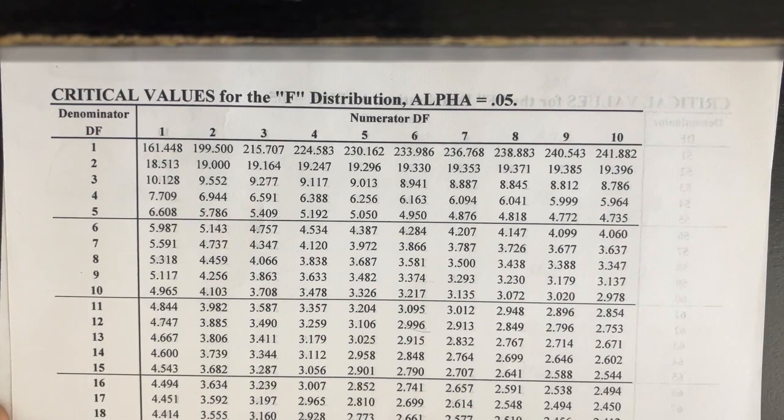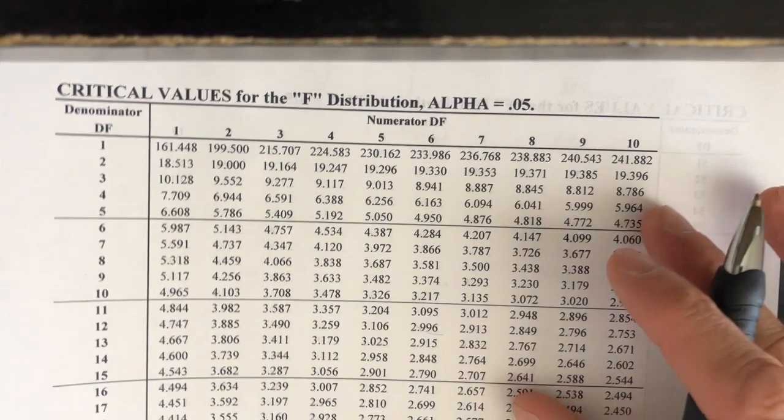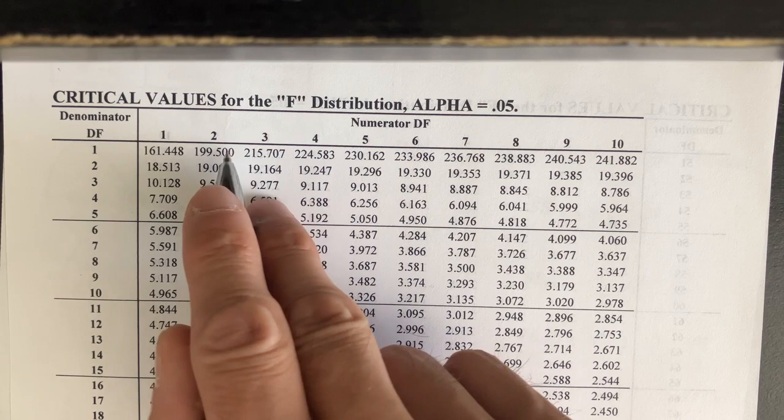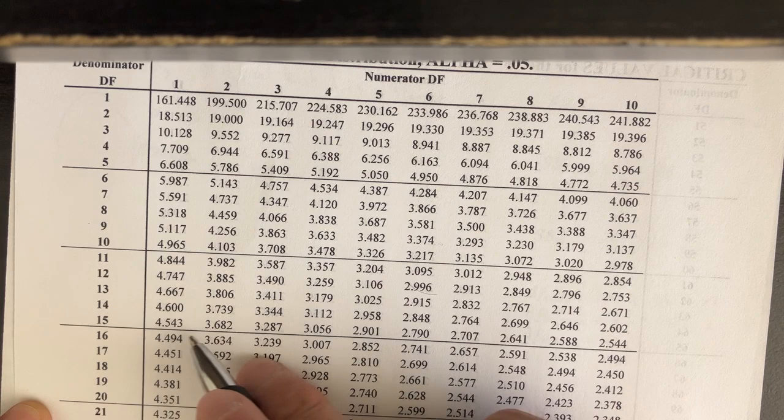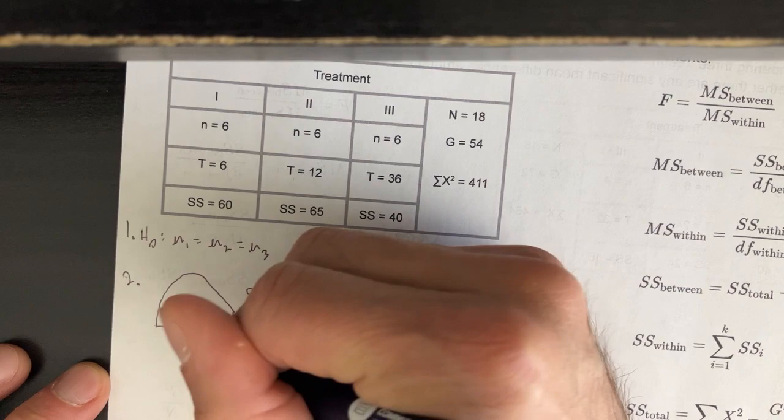Now we look at the F distribution table for alpha 0.05. We identify the degrees of freedom between — which was 2 — across the top row, then scroll down to the degrees of freedom within on the sidebar, which was 15. We get 3.682 as our cutoff value.